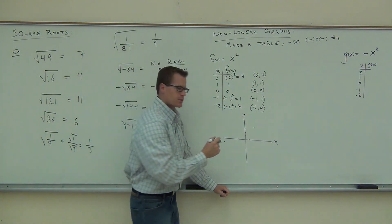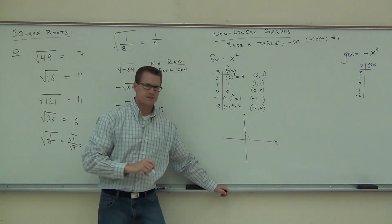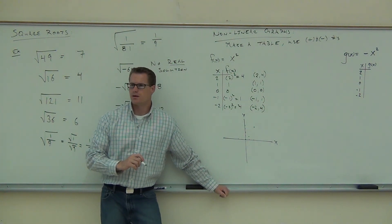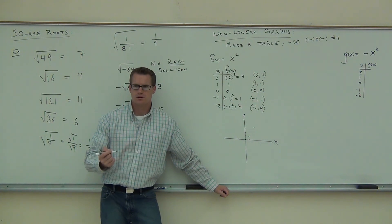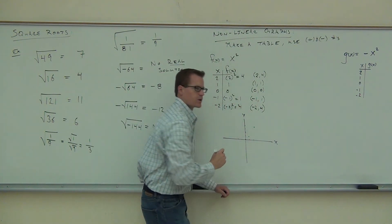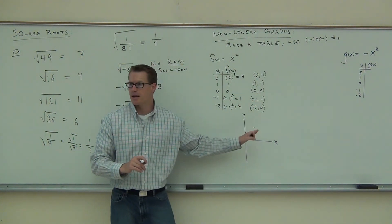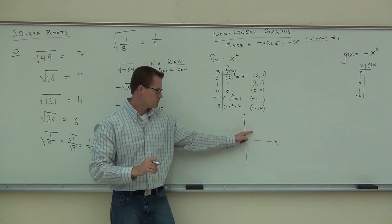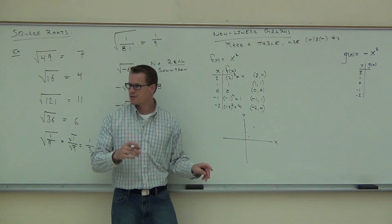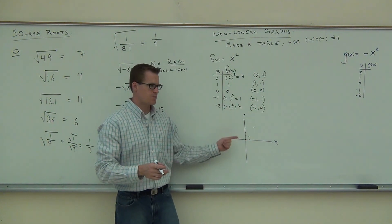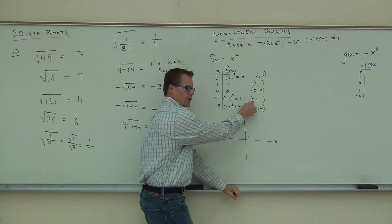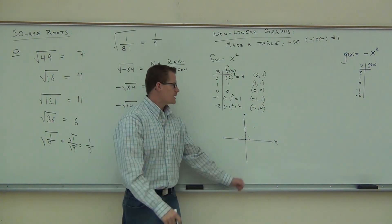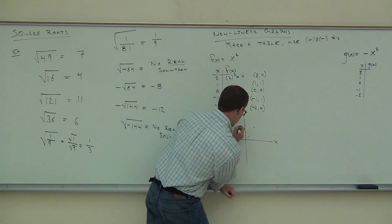Next we plot (1, 1), then (0, 0) — that's just our origin. Now the other ones: (-1, 1) and (-2, 4). This is why I said you have to have both sides. If you only have the right-hand side, it looks like it might just go straight. But once we graph the negative points, we see (-1, 1) is up here — that's not what we expected. And (-2, 4) is right here. We need both sides to see what the graph is really doing.